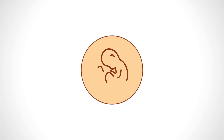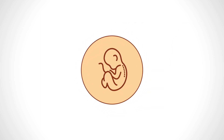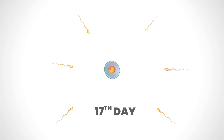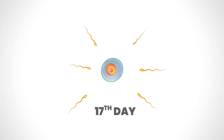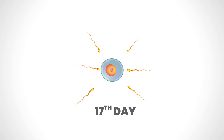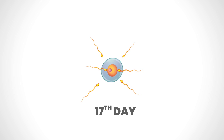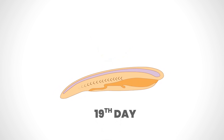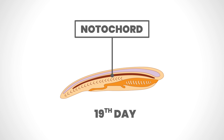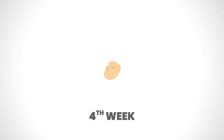Let us now see how the spine actually develops. On the seventeenth day after conception, the ovum and sperm meet and development of the human spine begins. On the nineteenth day, the notochord is formed, which gives rise to intervertebral discs in adults.